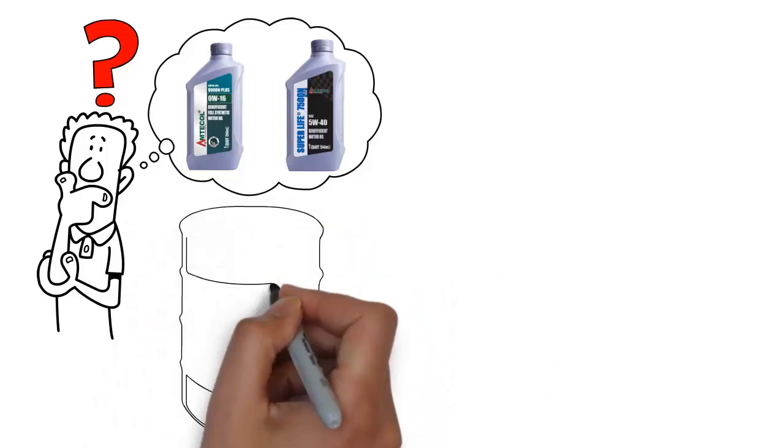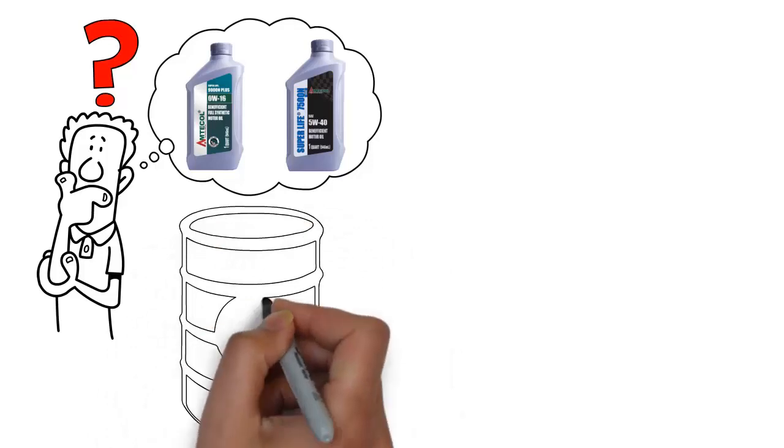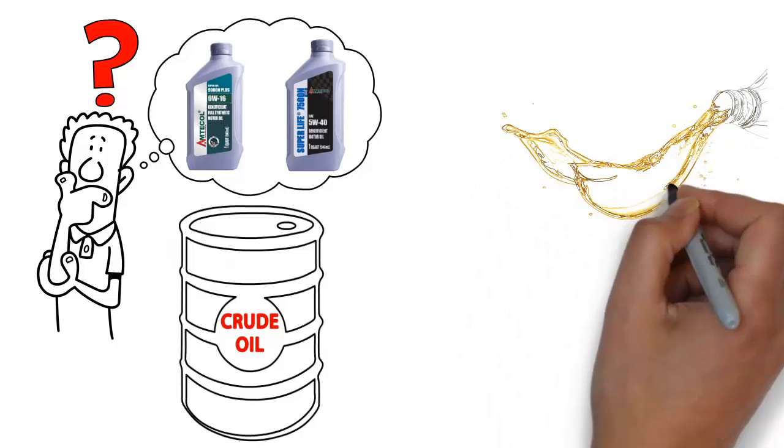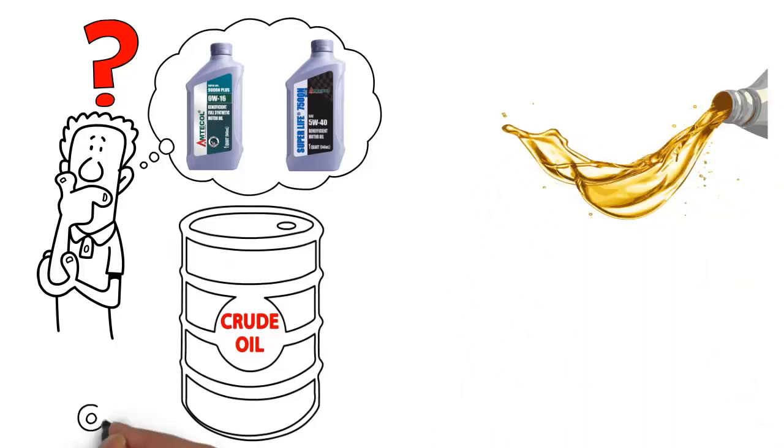Conventional oil is distilled and refined from crude oil, a naturally occurring liquid fossil fuel. It has excellent properties that allow it to provide lubrication in high temperatures as well as maintaining its stability over long periods of time.